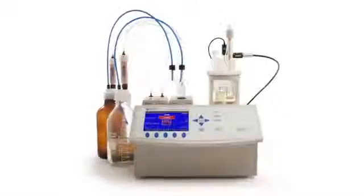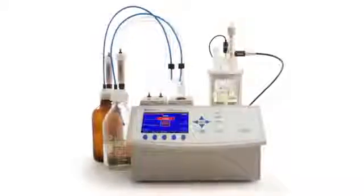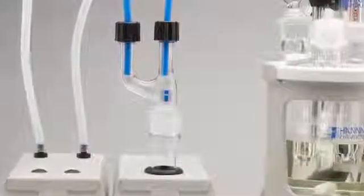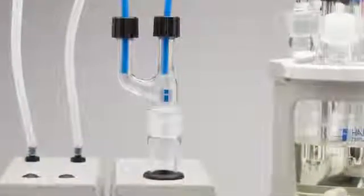The HI904 coulometric Carl Fischer titrator measures very low levels of water, ranging from one part per million to 5%. The HI904 features a sealed system with integrated diaphragm, air pump, and beaker adapter.